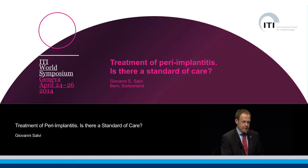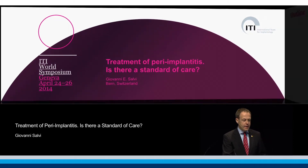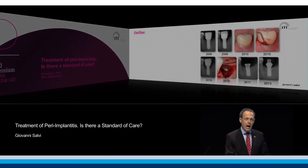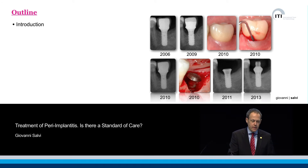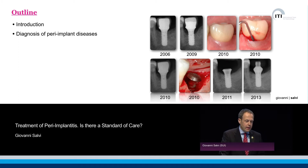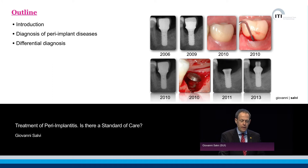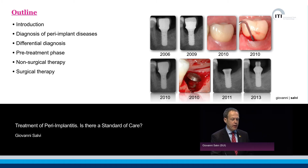But I have a lot of evidence out of the consensus conference that I would like to present to you, and this is the outline of my lecture. I would like to start with a short introduction, diagnosis and definitions of peri-implant diseases, then differential diagnosis — what is not a classic form of peri-implantitis — pre-treatment phase, non-surgical therapy, surgical therapy, supportive therapy, and some conclusions.